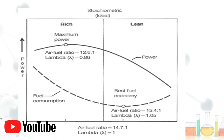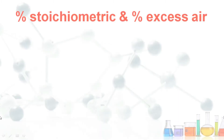There is a graph between power and air-flow ratio. For an IC engine, we typically consider the stoichiometric air-fuel ratio to be 14.7:1.